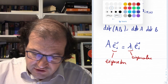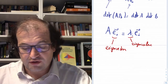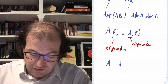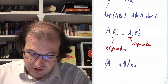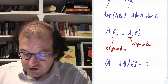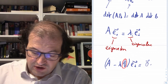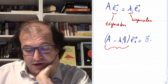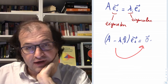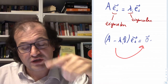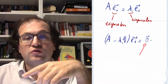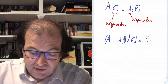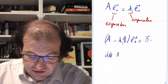Let's look at the consequences of this definition and try to solve the eigenvector equation. We rewrite it as (A − λᵢI)eᵢ = 0. Two things can happen: if det(A − λᵢI) ≠ 0, then the matrix is invertible and eᵢ = 0, which we don't allow. Therefore we must demand that det(A − λᵢI) = 0.